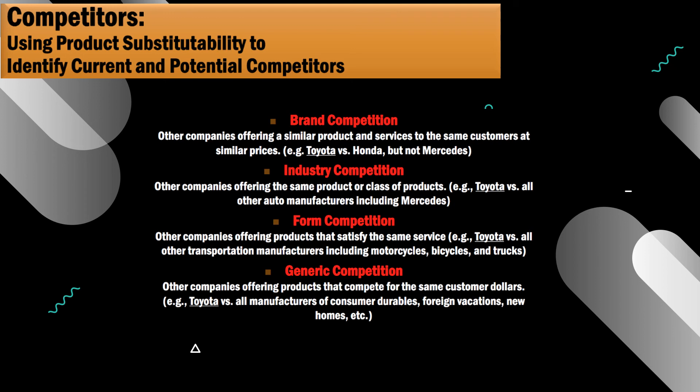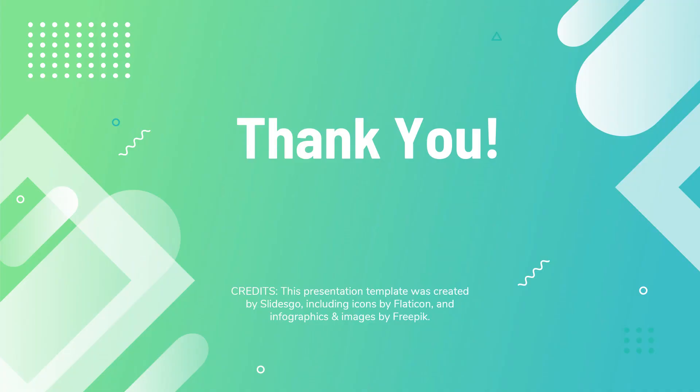Then getting closer to marketing hyperopia, we've got generic competition. The Toyota example pictured on the slide is a great way to describe generic competition — here Toyota is competing for the same customer dollars that would be spent on big purchases like a house, an extravagant vacation, or maybe even a boat. And that is competitors with using product substitutability to identify current and potential competitors.